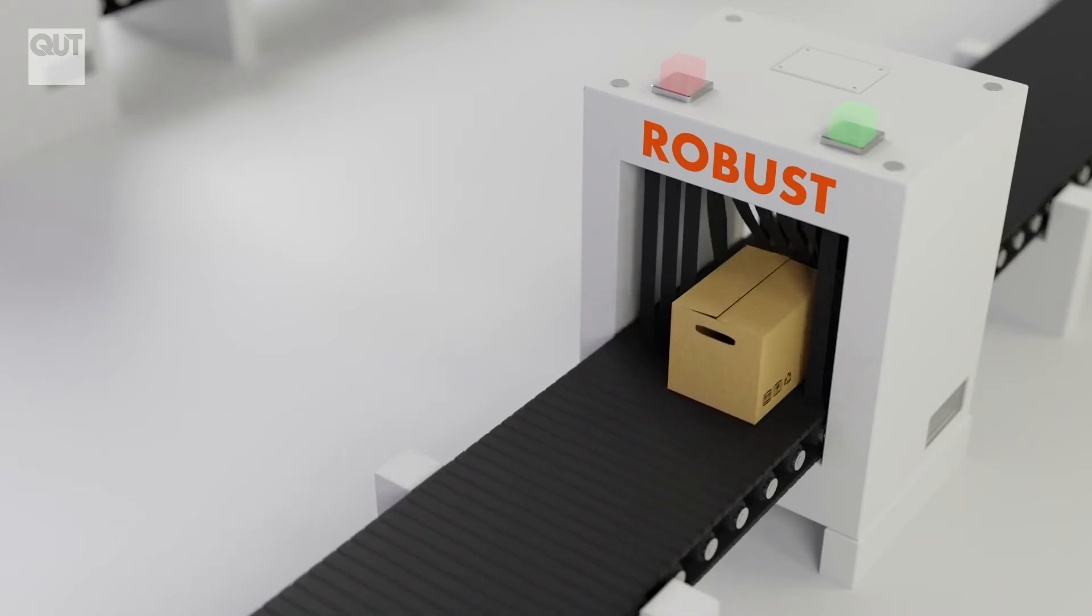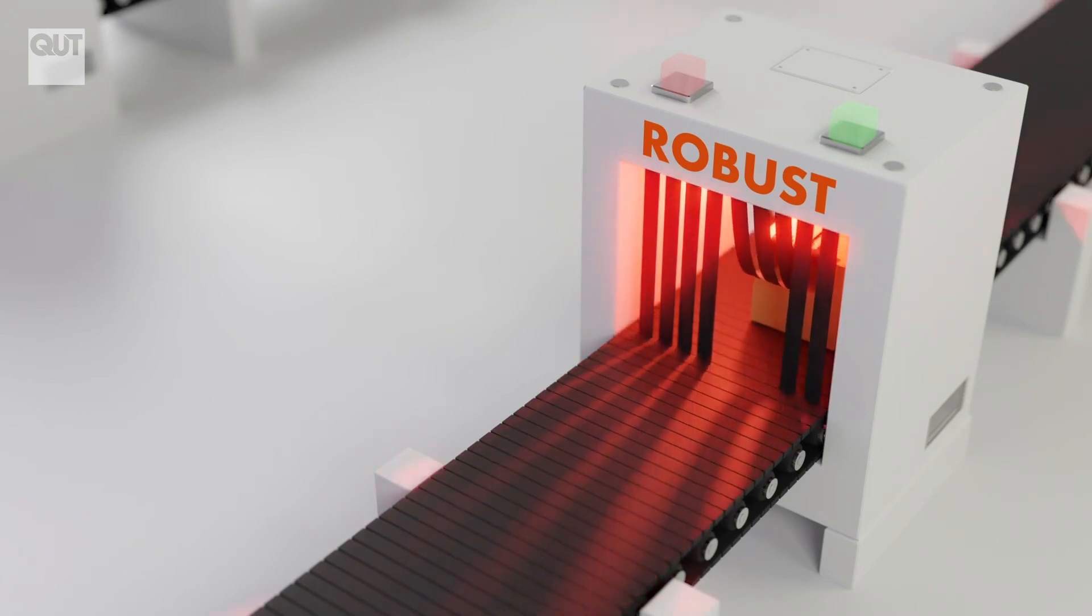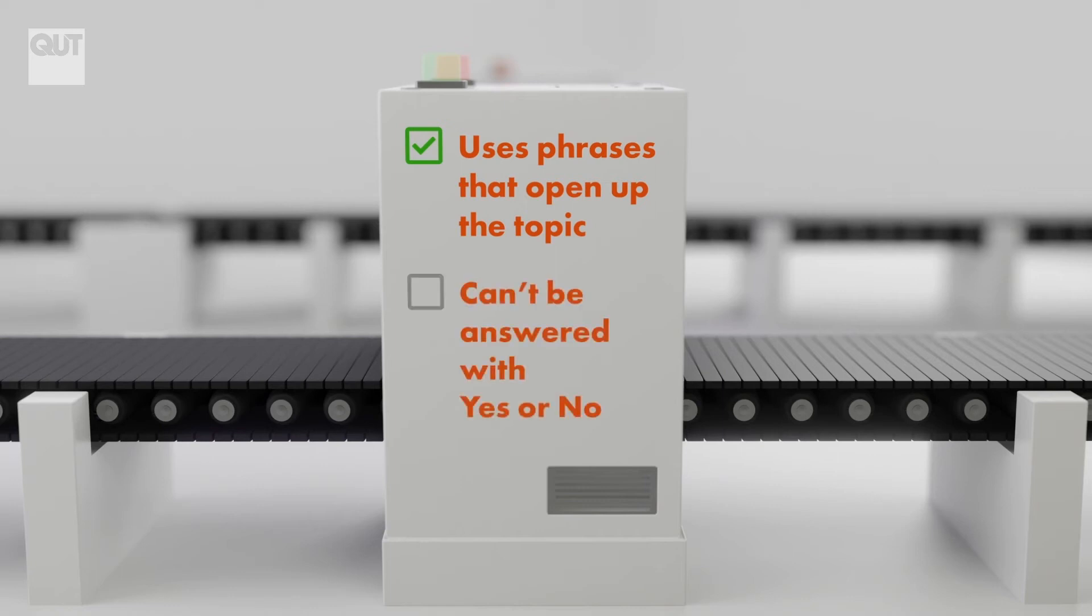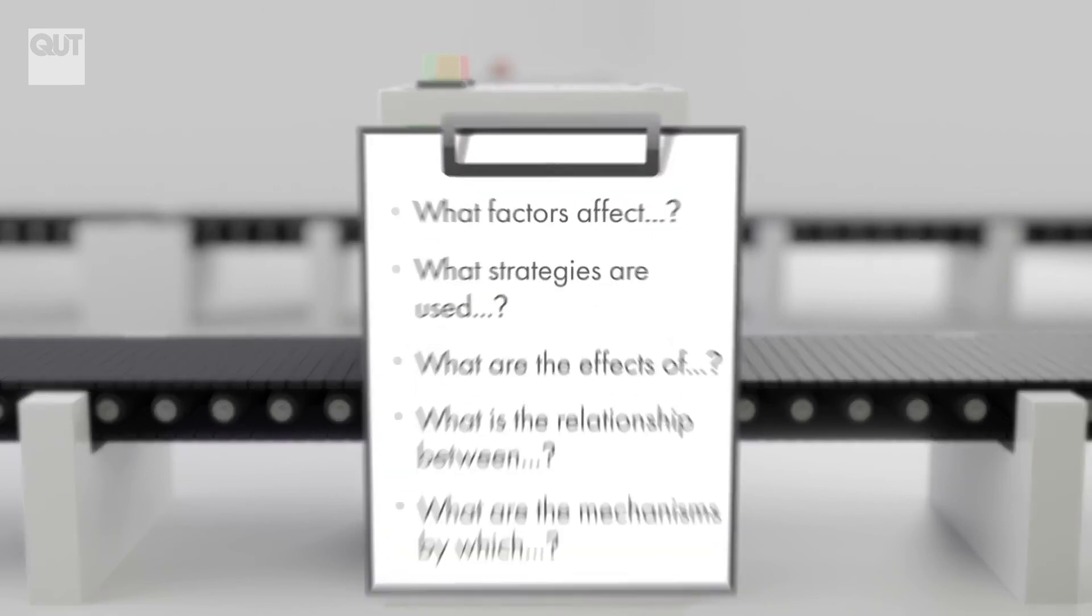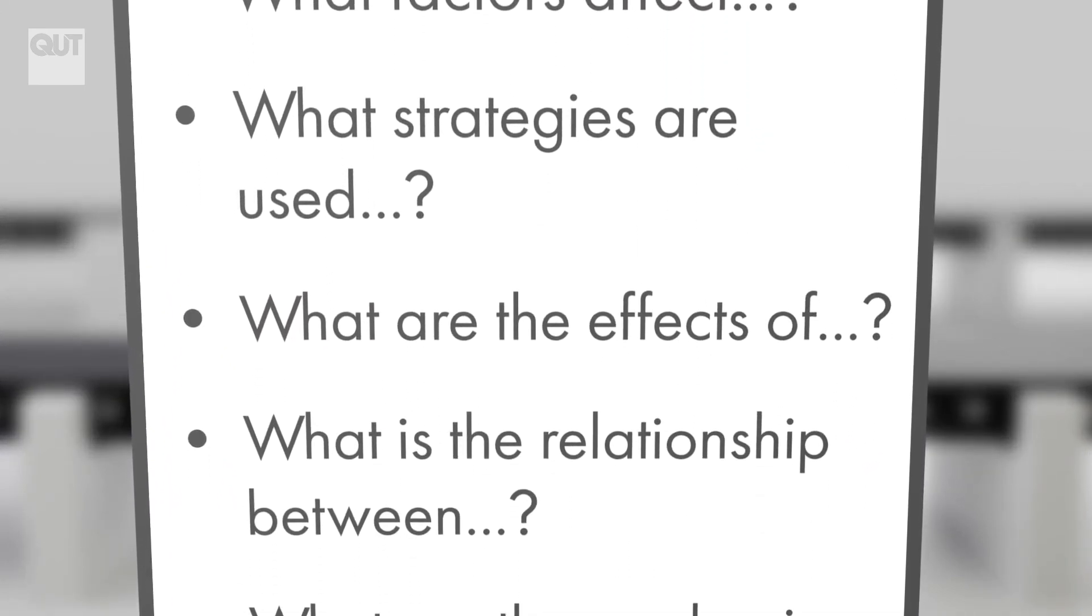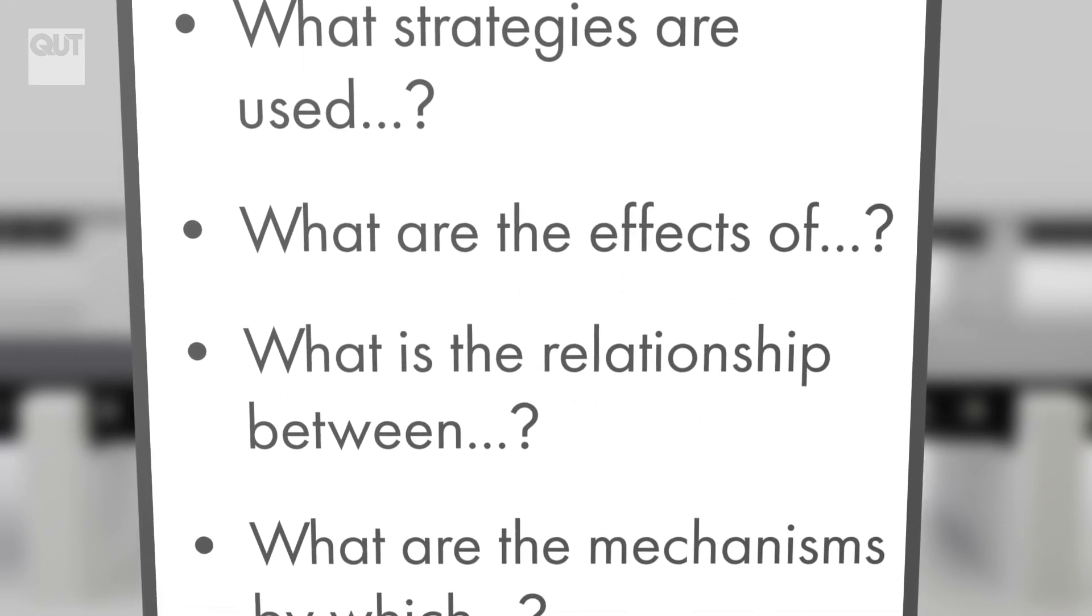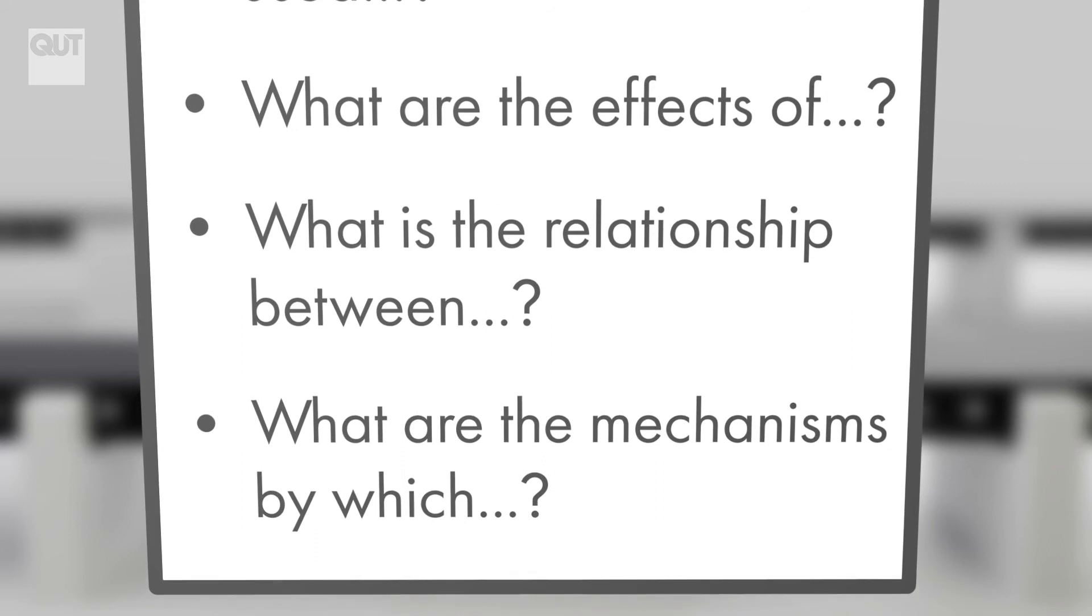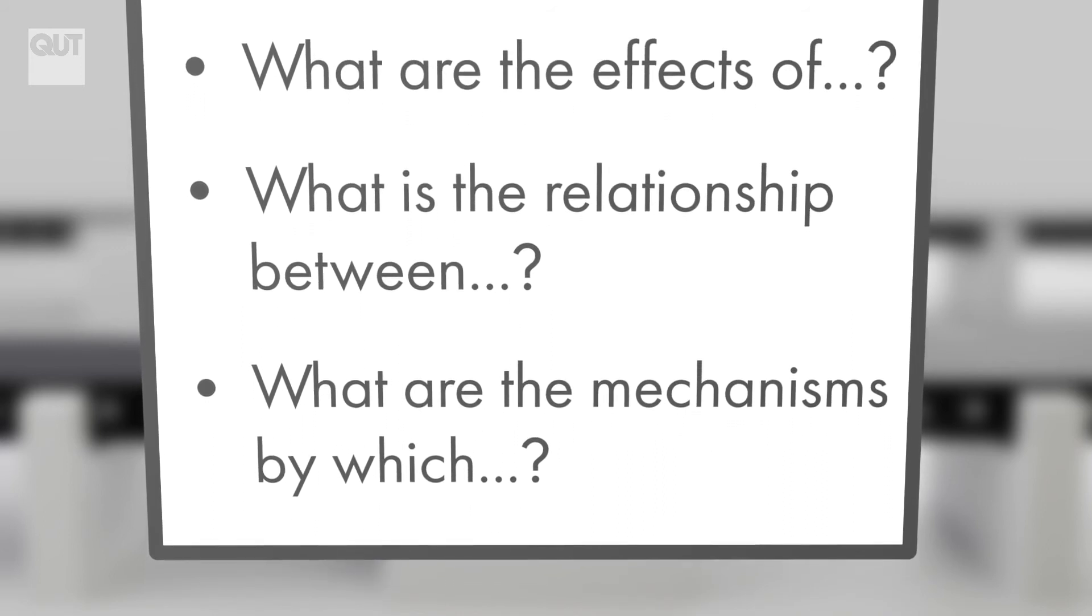The question will produce an answer that is robust and complex. You do that by using phrases that will open up the topic. If you can answer your question with a yes or no, it is not robust. Some good examples: What factors affect? What strategies are used? What are the effects of? What is the relationship between? What are the mechanisms by which?